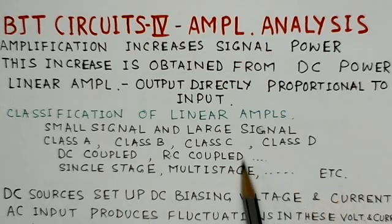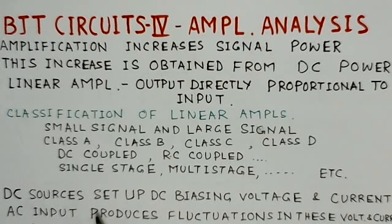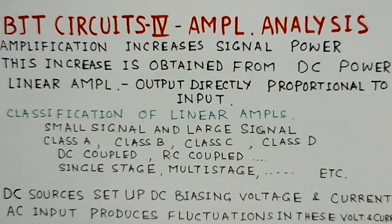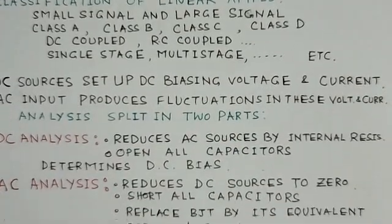For BJT amplifiers, we apply a DC source. The purpose of the DC source is to set up the biasing voltages and currents in the circuit. When we apply the AC input to amplify, it produces fluctuations in these DC voltages and currents, and by this way we get amplification of the signals.